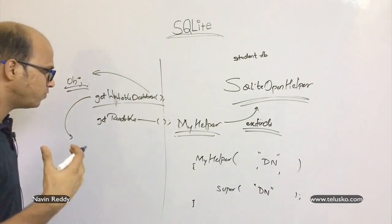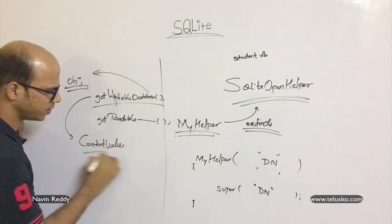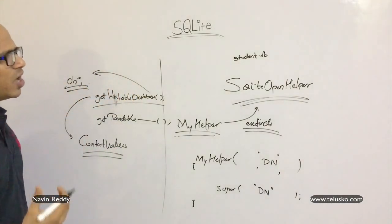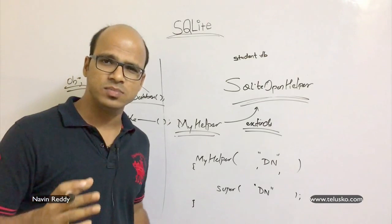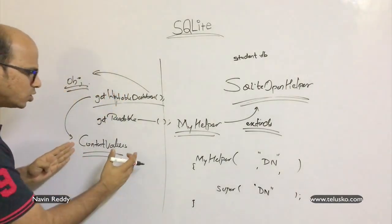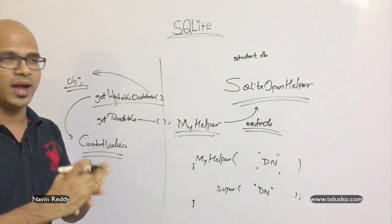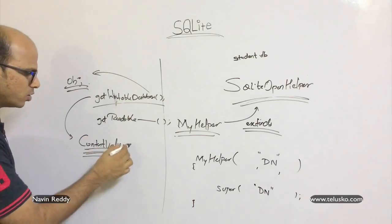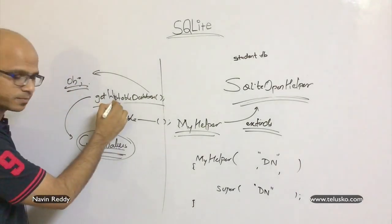To store data you need to create something called ContentValues. ContentValues is a class you use to insert values into the database. For example, if you have a student table with columns SID, roll number, name, and marks, you can set all the values — say roll number 1, name Naveen, marks 50 — using ContentValues. Once you have the values set, you store that data inside your database, which we'll see in the practical.